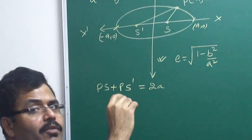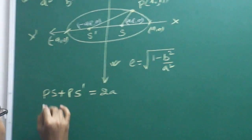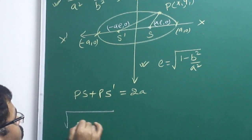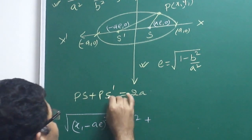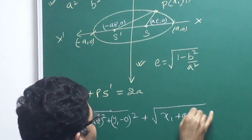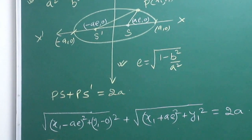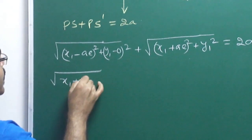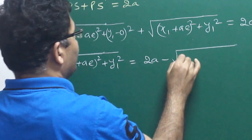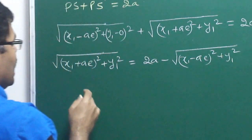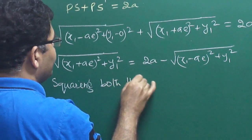What are the coordinates? The coordinate is (a, 0) and the coordinate is (minus a, 0). Using the distance formula, PS is the square root of (x1 minus a) whole squared plus y1 squared, and PS-dash is the square root of (x1 plus a) whole squared plus y1 squared, and their sum is equal to 2a.